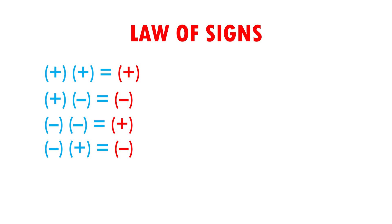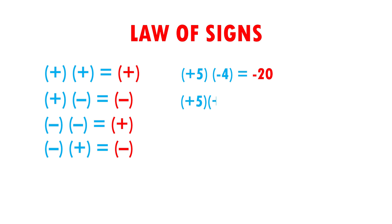The first is positive five times negative four. First, I'm going to multiply the signs. Positive times negative gives me negative, and five times four gives me 20. Now the next: first the signs. Positive times positive gives me positive, and five times four gives me 20.